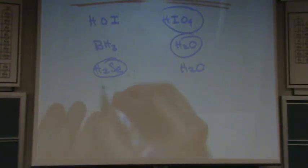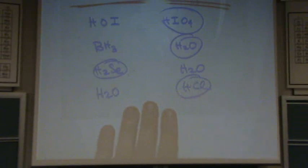How about H2O and HCl? HCl. It is both to the right and down. So, HCl is a stronger acid.